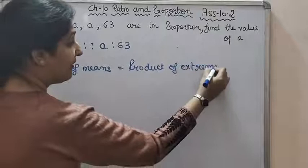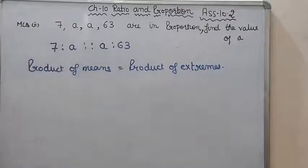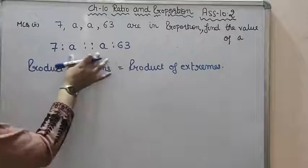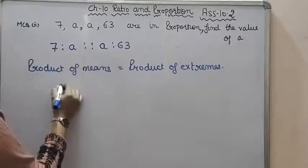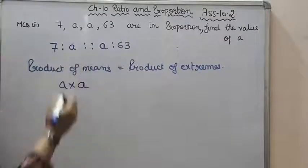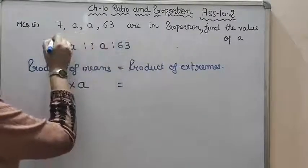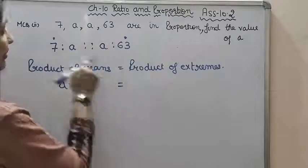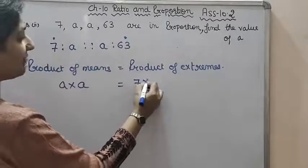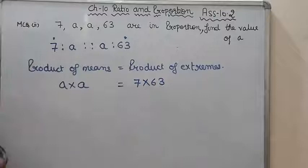I have told you that the product of means is equals to product of extremes. I told you that this property, we will use it. If you are given terms in proportion and any term is missing, or both terms are missing, in that case we will use this property. Now, product of means - that means mean terms. Which are the means? A and A. The product of these two, that is multiplication, is equals to the product of extremes. Extreme means this one and this one, first and fourth term. So that will be seven into sixty-three.